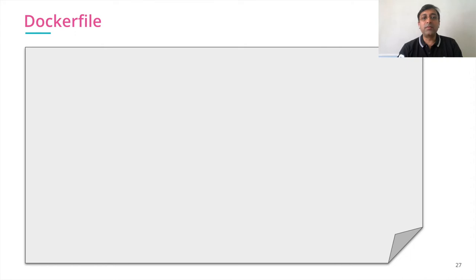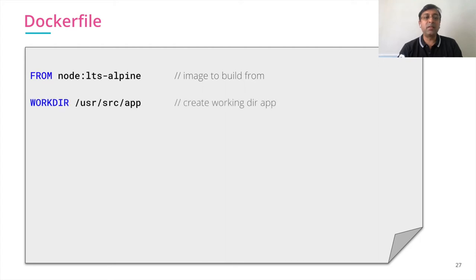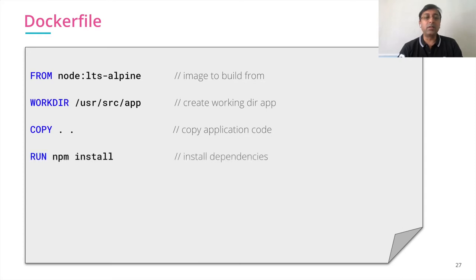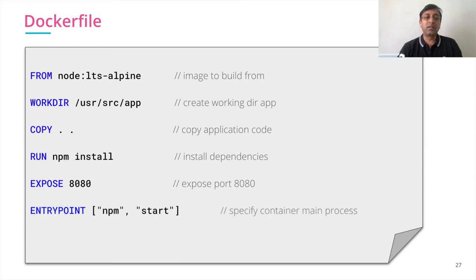We created a Dockerfile for our Node.js application. We gave the base image as node:lts-alpine, then set the working directory, copied our application code, installed all the dependencies using the npm install command, and specified the port to expose from the Docker image.